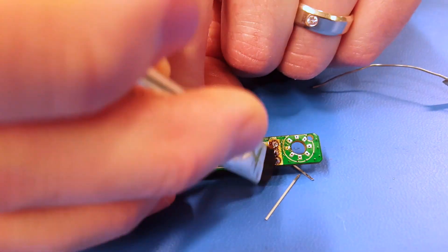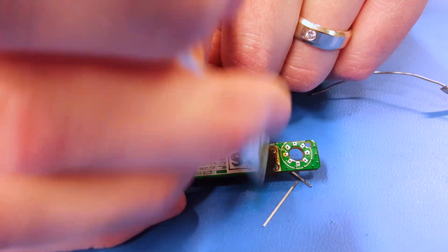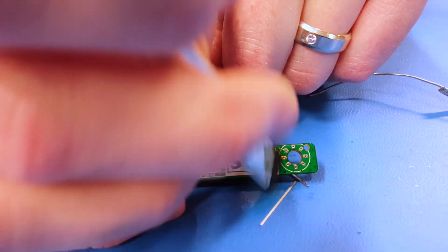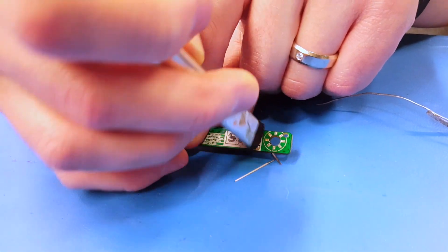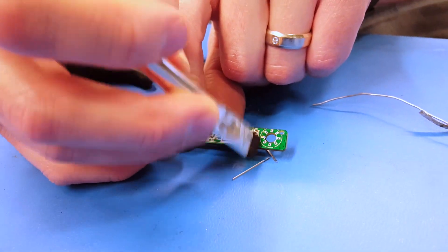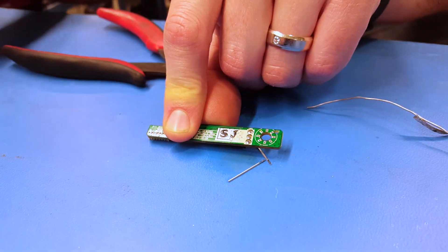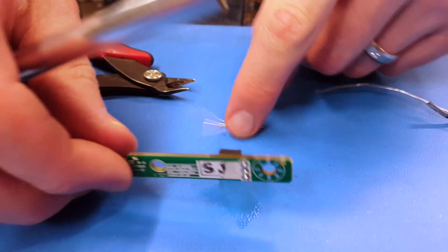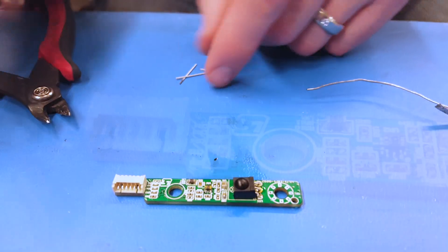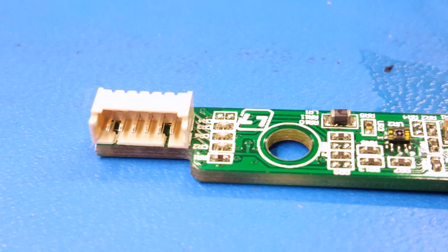Clean up the pads with some isopropyl alcohol and a brush. Next, we will replace the resistor on the board.